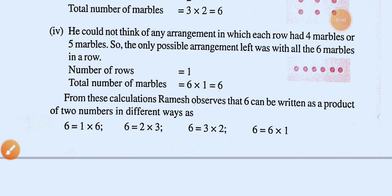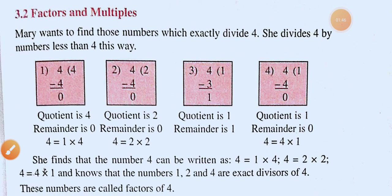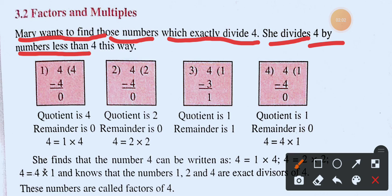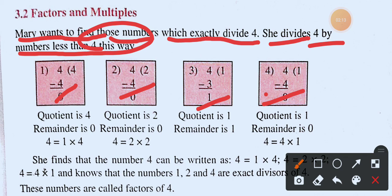Now let us look at factors and multiples. Mary wants to find numbers which exactly divide four. She divides four by numbers less than four: four divided by one gives four remainder zero; four divided by two gives two remainder zero; four divided by three gives one remainder one; four divided by four gives one remainder zero.